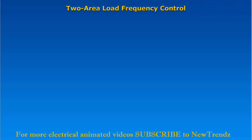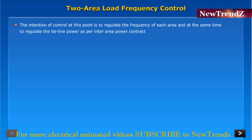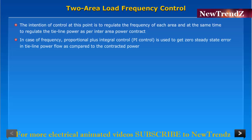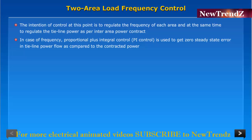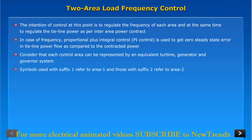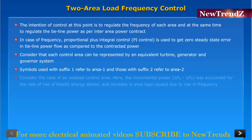In two-area load frequency control, the intention of control is to regulate the frequency of each area and at the same time to regulate the tie line power as per the inter-area power contract. In the case of frequency control, proportional plus integral (PI) control is used to get zero steady-state error as compared to the contracted power. Each control area can be represented by an equivalent turbine-generator and governor system. Symbols with suffix one refer to area one, and those with suffix two refer to area two.